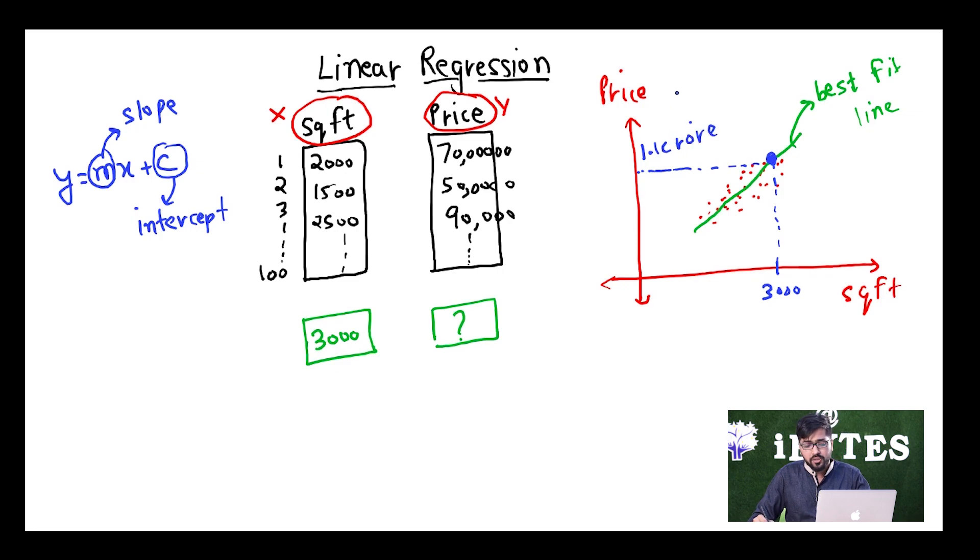According to me your house should be sold at let's say 1.1 crores. So your house is going to be sold at 1.1 crores. It was 90 lakh over here at 2500, similarly 50 lakhs over here, so your house should be sold at 1.1 crores if you are having 3000 square feet area. This is how the calculations are going to be made. It is going to be simply done on the basis of our best fit line.